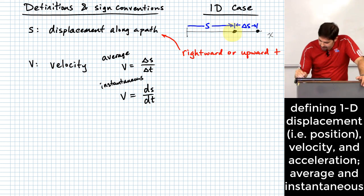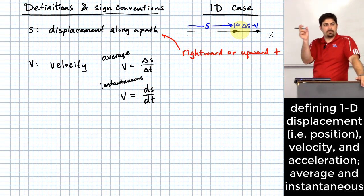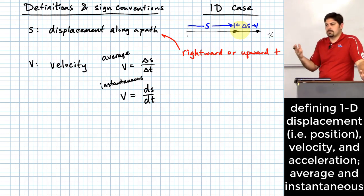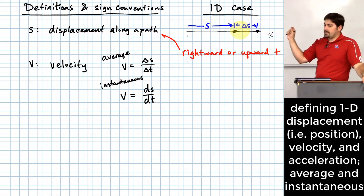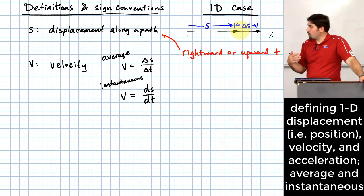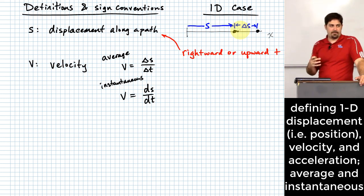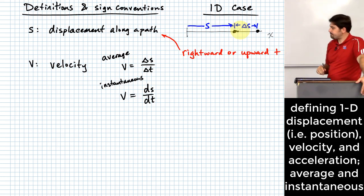Imagine another point just really, really close — to the point where we couldn't even say it had any size at all. That's how we talk about this in calculus. The amount of time it takes to move that infinitesimally small distance is an infinitesimally small amount of time — that's what dt refers to. ds/dt is just the derivative of displacement with respect to time.